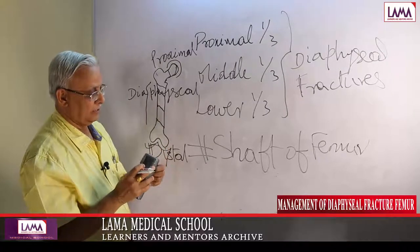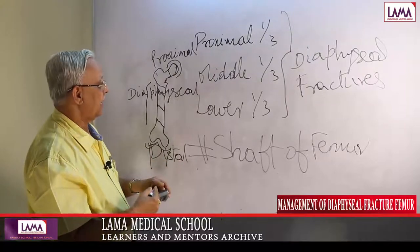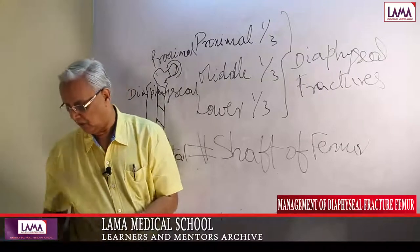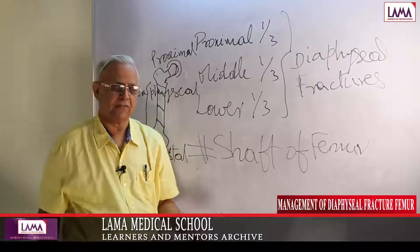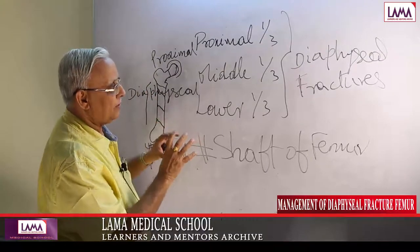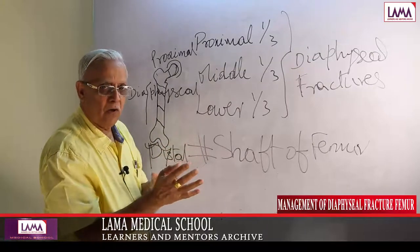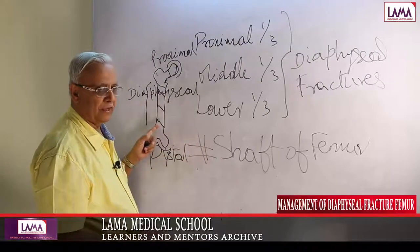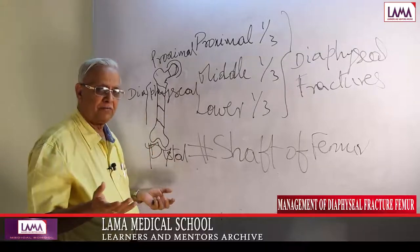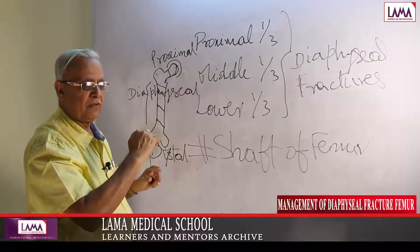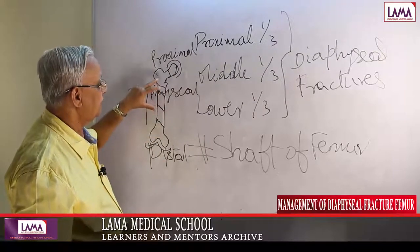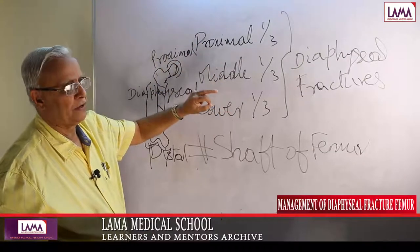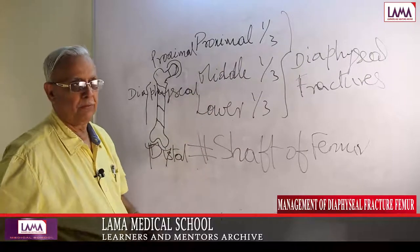This classification matters because each part of the shaft has its own muscular attachments. Depending on which muscles are attached, the fragments get rotated or go into varus or valgus. In lower one-third fractures, they may get flexed because the gastrocnemius heads are attached there.